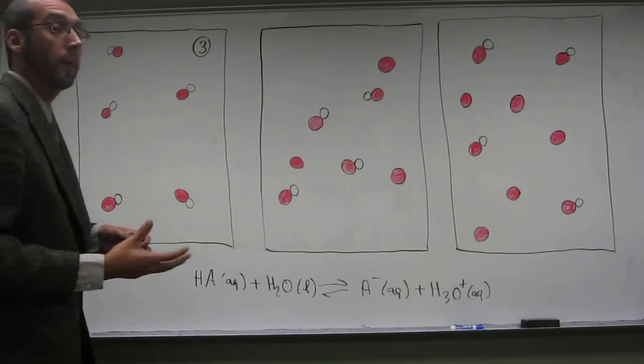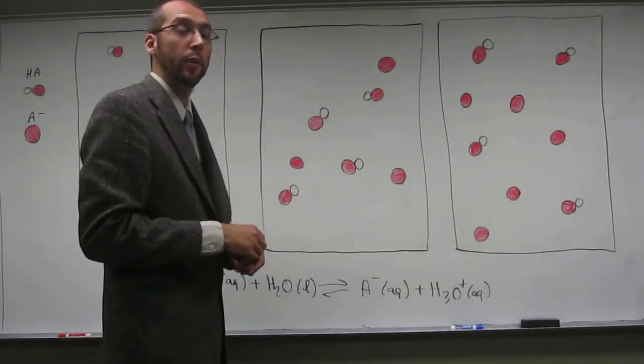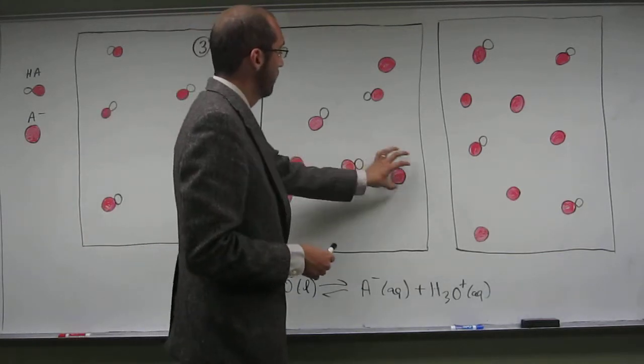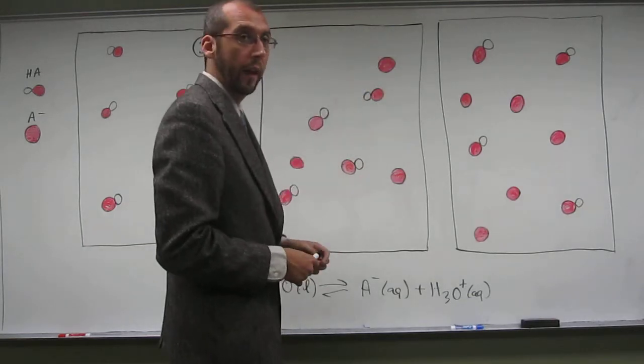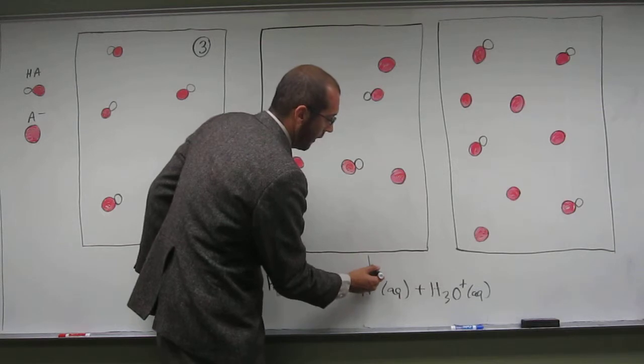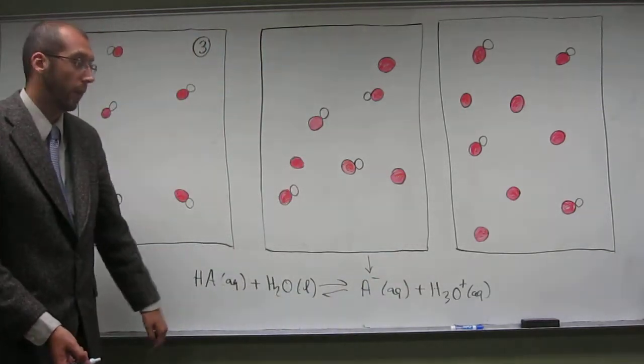So, the common ion effect comes in, like what we were saying, when we add some of the sodium salt of the conjugate base. So, here we've added some of that salt, and so when we add that to the solution, what's going to happen? It's going to push the reaction back this way.